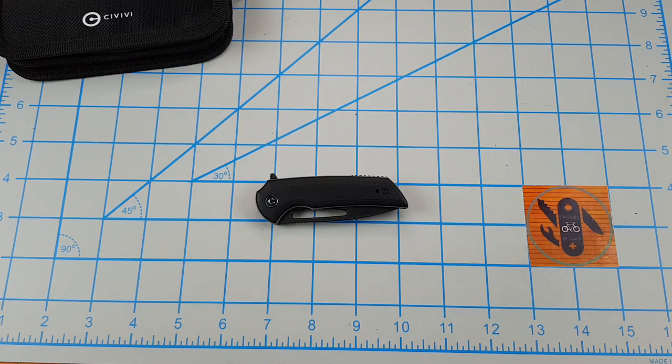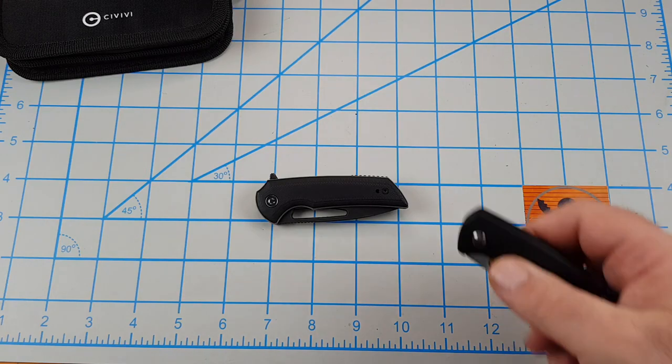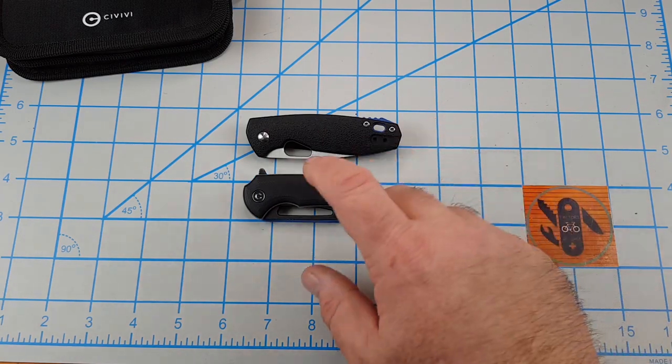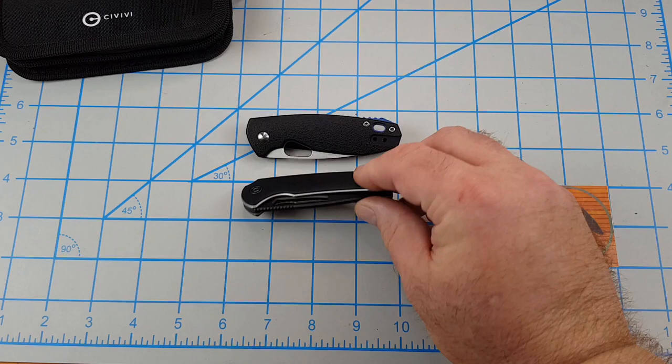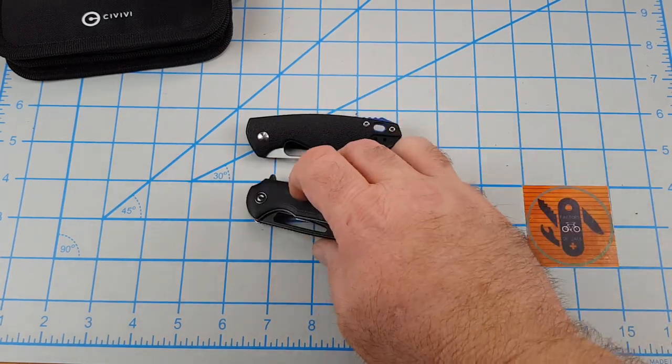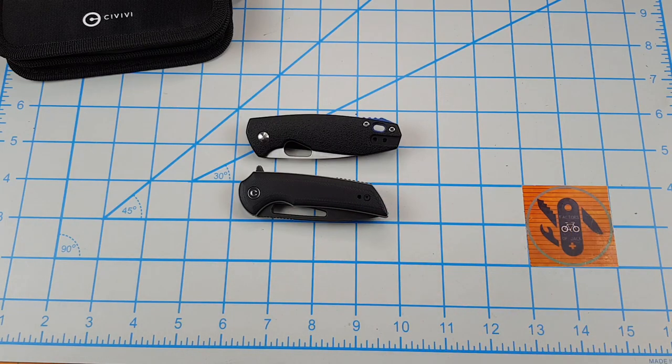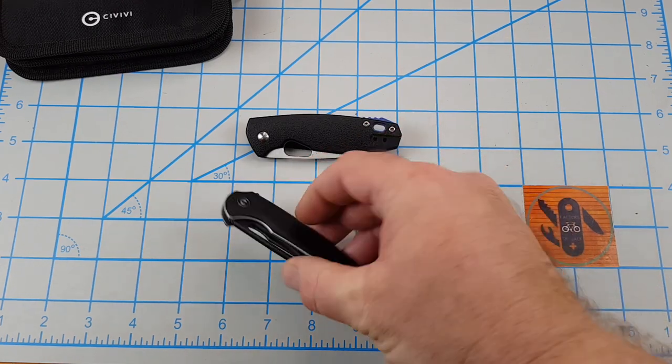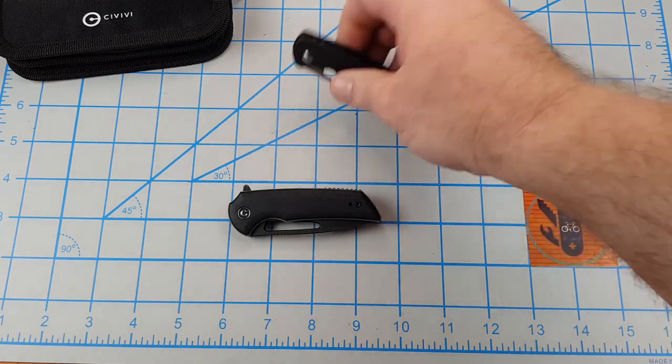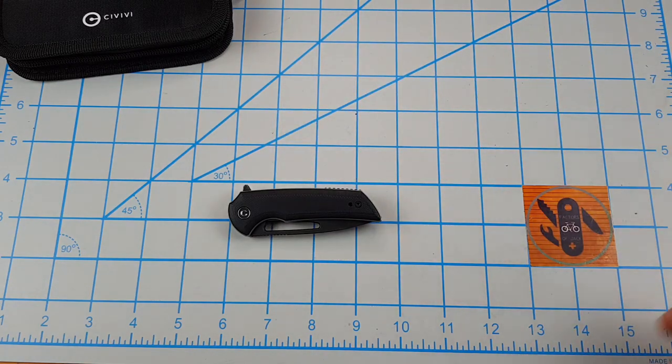This thing fits in my fifth pocket, my watch pocket, which is how I usually carry the Pilar. There's a secondary in my fifth pocket when I do carry it. This thing carries good in the fifth pocket. I had it in my regular front pocket in my jeans for a while. I changed to athletic shorts, gym shorts. I've had this in the pocket, you forget it's there. Like I said, it's only two and a half ounces.